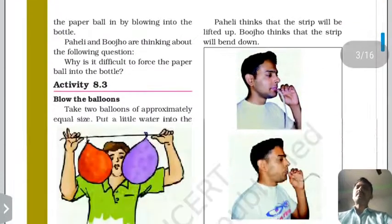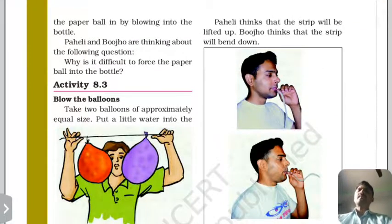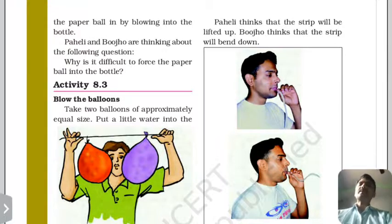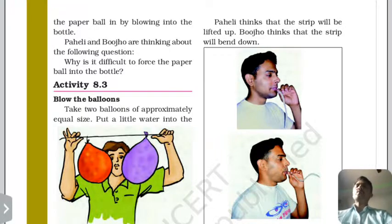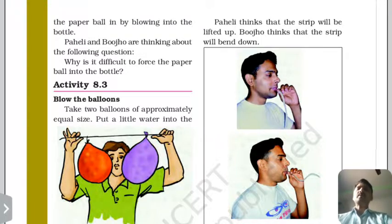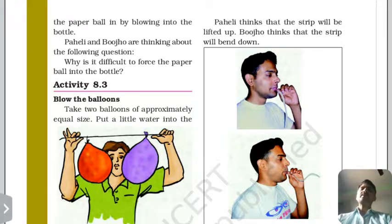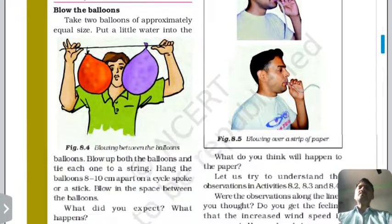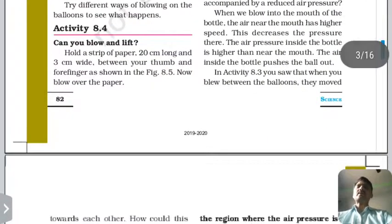If we put two balloons on a stick in air, the warm side goes up, showing that warm air is lighter. Similarly, a strip of paper demonstrates that high wind creates low air pressure on the side where air moves faster.